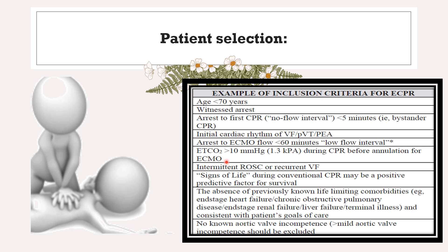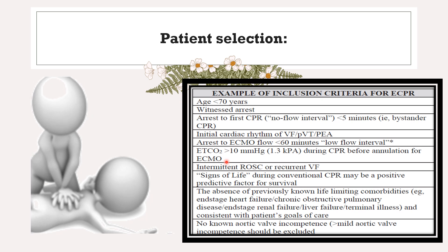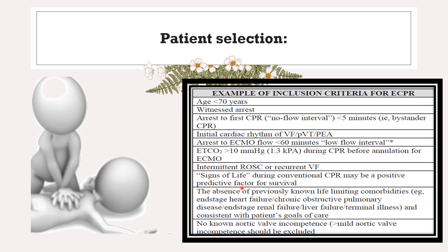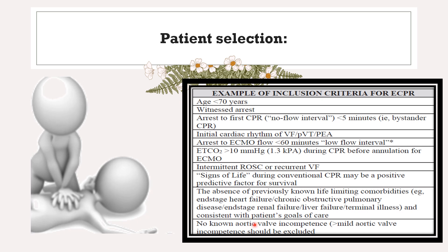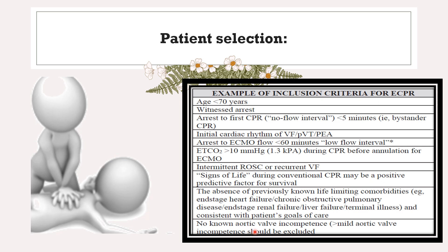End-tidal CO2 above 10 mmHg ensures there is adequate cardiac compression and cardiac output, so we can be reassured about the neurological status of the patient. Intermittent ROSC or recurrent VF, and signs of life during conventional CPR, may be positively predictive for survival. Absence of known comorbidities such as COPD, end-stage heart failure, end-stage renal disease, or liver failure — all of these affect the patient's goals of care. Also, the patient should not have known aortic incompetence greater than mild; significant aortic incompetence should be excluded.